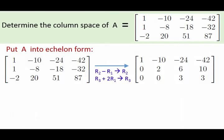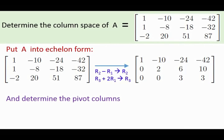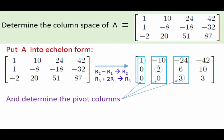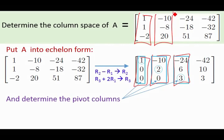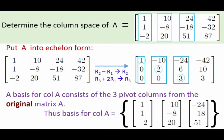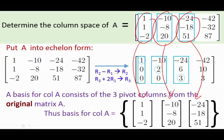To determine the fewest number of vectors we need to describe our column space, we can put A into echelon form. Once it's in echelon form, we can determine our pivot columns. Our first non-zero terms give us our pivots, and once we have our pivots, we can get our pivot columns. Those pivot columns also correspond to pivot columns in our original matrix, so we take the pivot columns from our original matrix, and that gives us a basis for our column space.